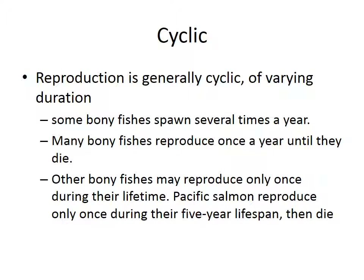Some bony fishes spawn several times a year, producing many sexually diverse individuals. Many bony fishes reproduce once a year until they die. Other bony fishes may reproduce only once during their entire lifetime, like the Pacific salmon, which reproduces only once in its five-year lifespan and then dies. They're born in freshwater, migrate to the sea, and when ready to die, they return to freshwater to lay their eggs and die.